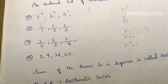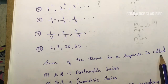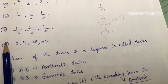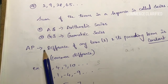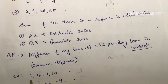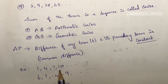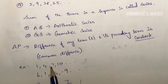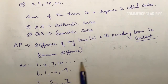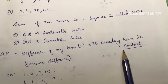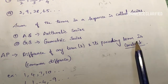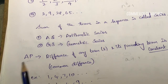What is an arithmetic series? The sum of terms in a sequence is called a series. In an arithmetic progression, consider the sequence 1, 4, 7, 10. The difference between consecutive terms is constant: 10 minus 7 is 3, 7 minus 4 is 3, 4 minus 1 is 3. This constant value is called the common difference. Since the difference of any term and its preceding term is constant, this sequence is an arithmetic progression.